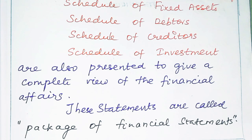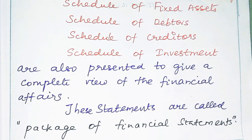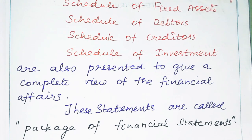These statements — profit and loss account, balance sheet, Statement of Retained Earnings, Schedule of Fixed Assets, and Schedules of Debtors, Creditors, and Investments — are together called the package of financial statements. They can be viewed from the perspective of management, owners, and investors, and there are various advantages to each viewpoint.